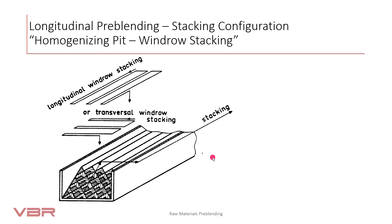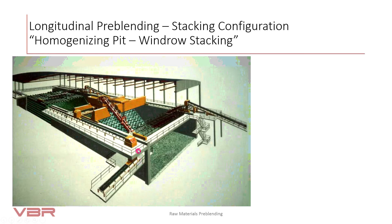The stacking in the homogenizing pit could be either windrow stacking in longitudinal or transversal layers. For best homogenizing effects, the transversal stacking is preferred. The homogenizing pit is applied for small pre-blending capacities or for sticky materials requiring good homogenizing efficiency. Due to the high investment cost, it is not normally used where a longitudinal chevron system can be used. Reclaim is performed by a bucket chain excavator lifting and discharging the material onto a bridge and a belt.